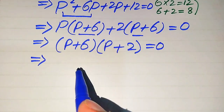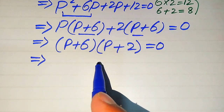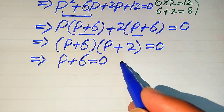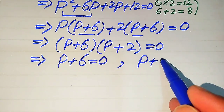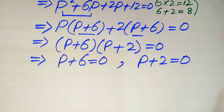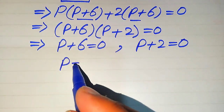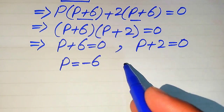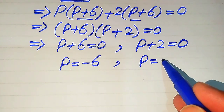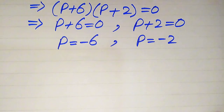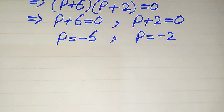We divide the equation into two cases. Case one: p + 6 = 0, giving p = −6. Case two: p + 2 = 0, giving p = −2. These are the two roots of the given equation obtained from this method. In the next steps we need to verify whether both roots are solutions or extraneous roots.